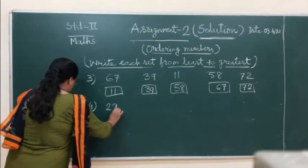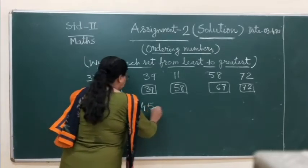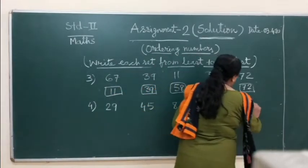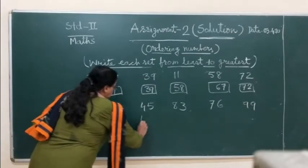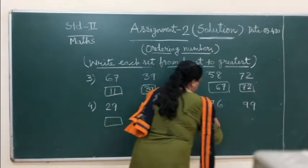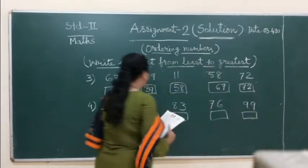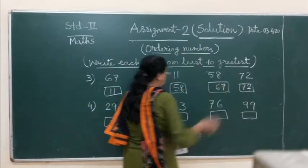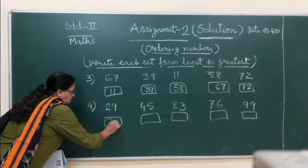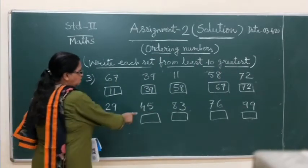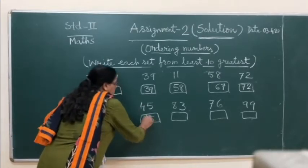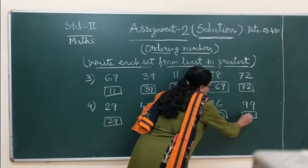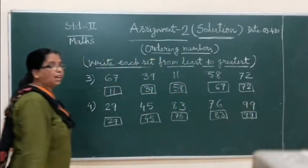Now we take the next one, that is 29, 45, 83, 76, 99. Again we will check which one is the smallest. We have 2, we have 4, we have 8, we have 7, we have 9. Smallest one is 29, then obviously 45, then 76, then 83, and last one is 99.